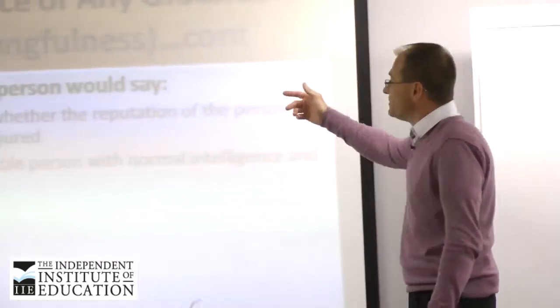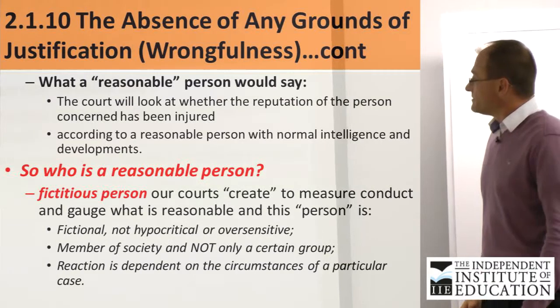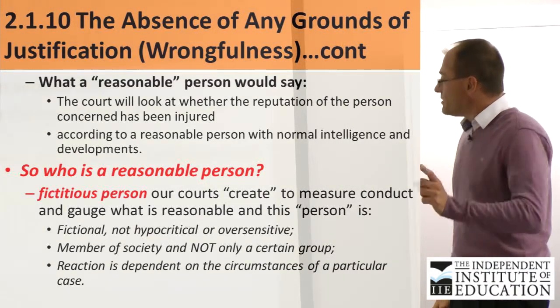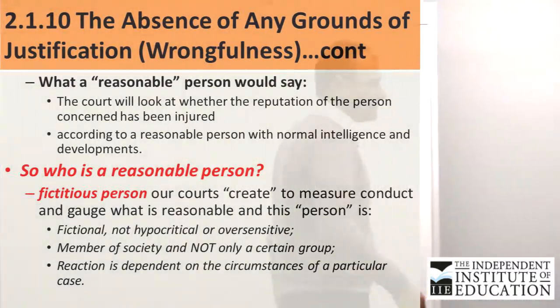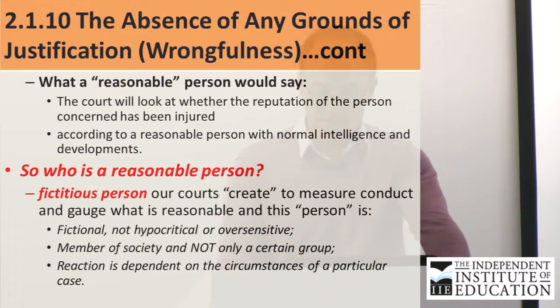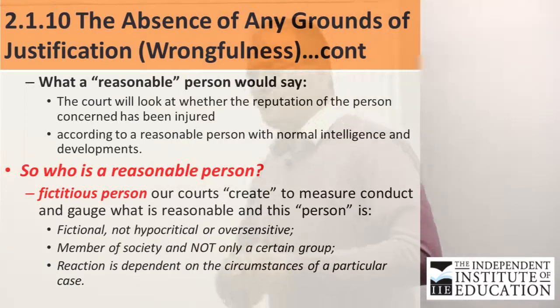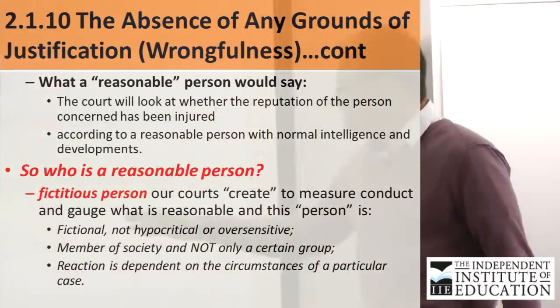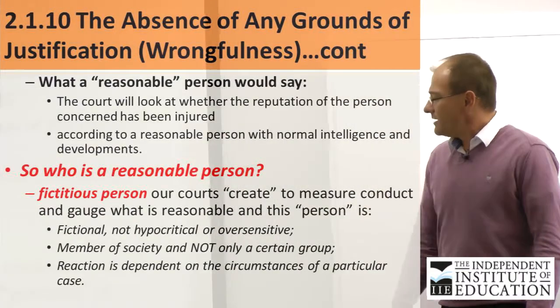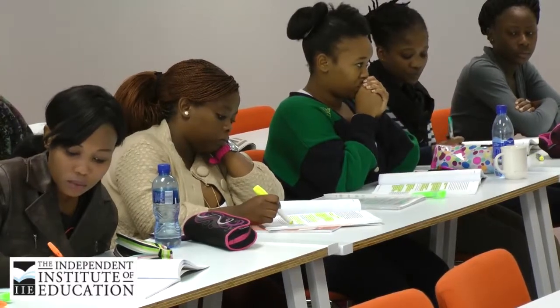What a reasonable person would say is key. Pretending that you're a judge, you would look at what a reasonable person will say. The court would look at whether the reputation of the person concerned has been injured according to a reasonable person with normal intelligence and development. We've spoken about the reasonable person test in previous lectures. Our courts create the measure of conduct and gauge what is reasonable. This person is fictional — he's not a real person. It's a person that the court makes up, and the court will create the measure of conduct and gauge what is reasonable according to what a reasonable person will do in certain circumstances.